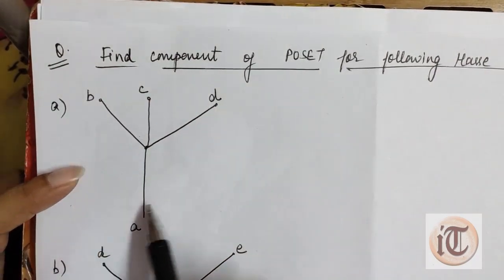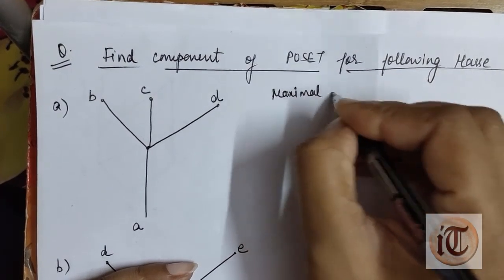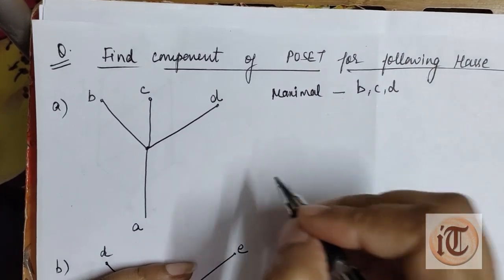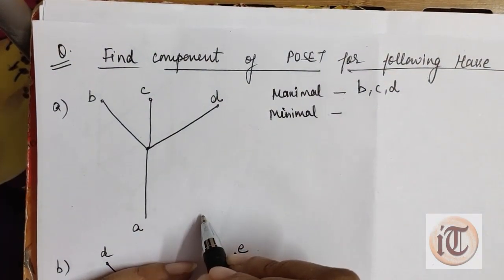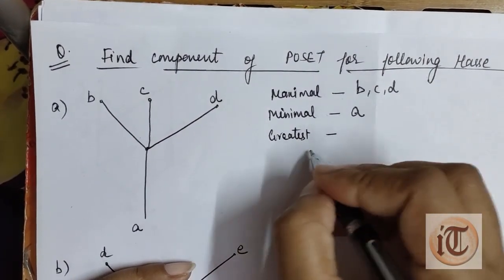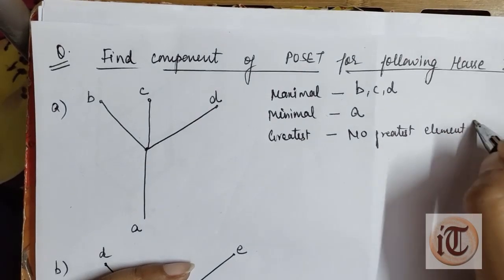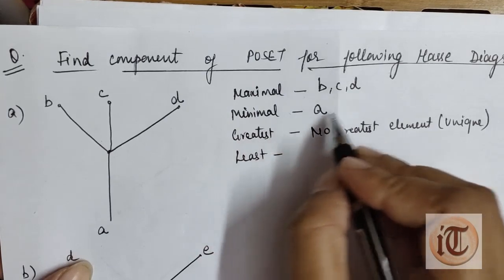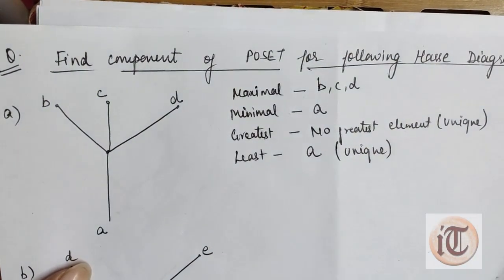Now we take another example. We have a given Hasse diagram with elements a, b, c, and d. The maximal elements are all the top elements: b, c, and d. The minimal element is a, the only bottom element — so minimum is 1 unique element. For greatest element, there is no unique element among the maximal elements, so no greatest element. For least element, a is the only minimal element and is unique, therefore the least element is a.